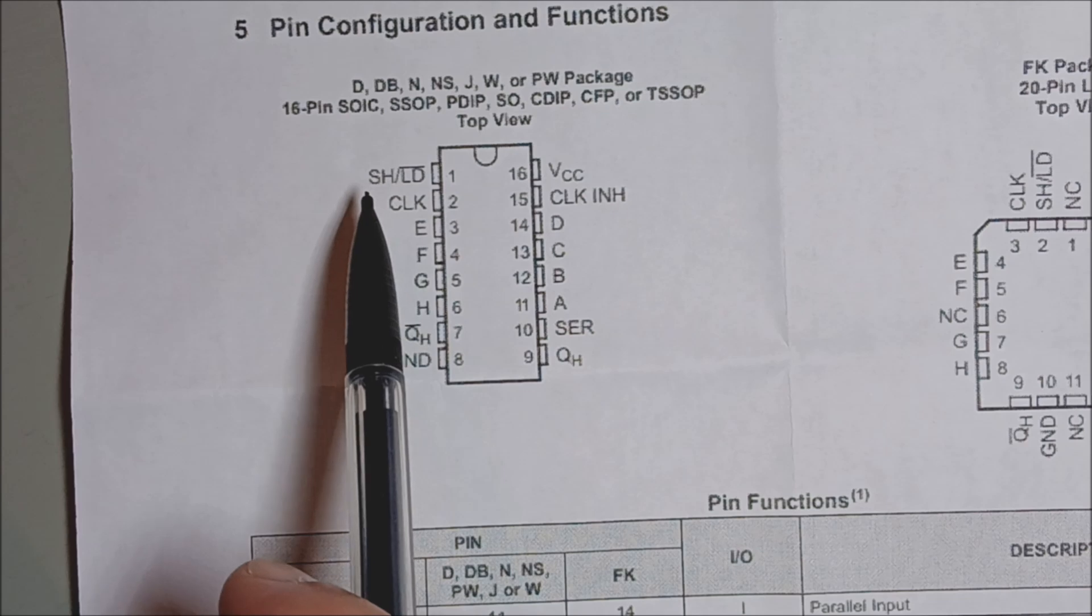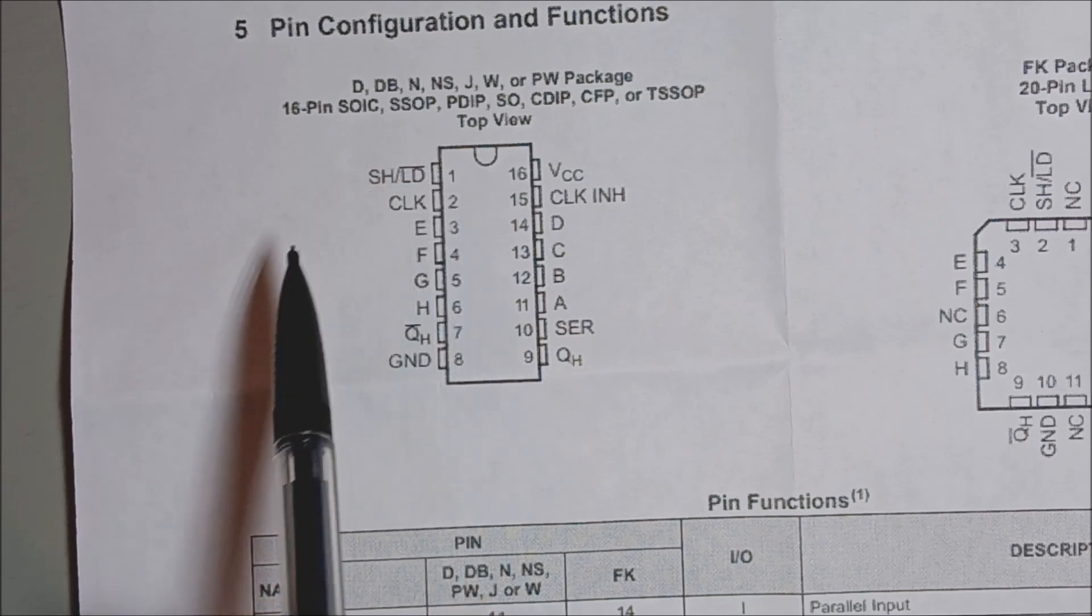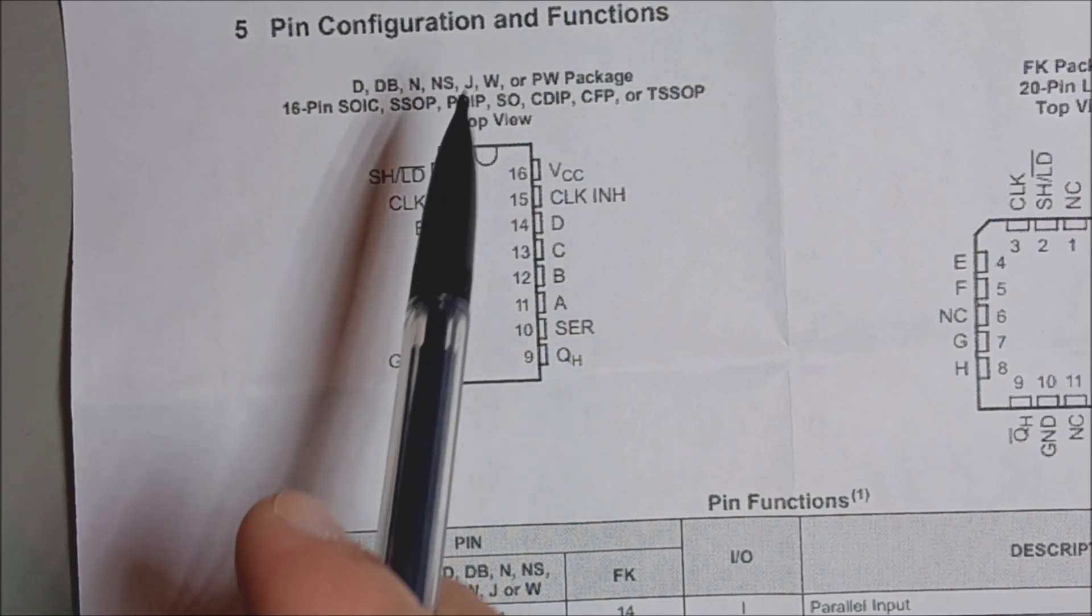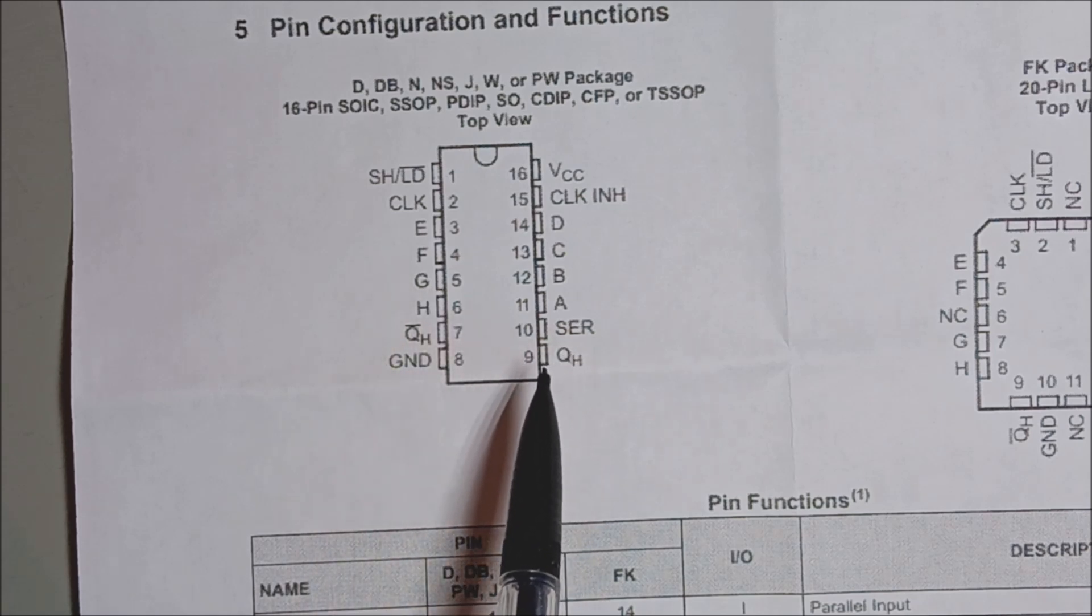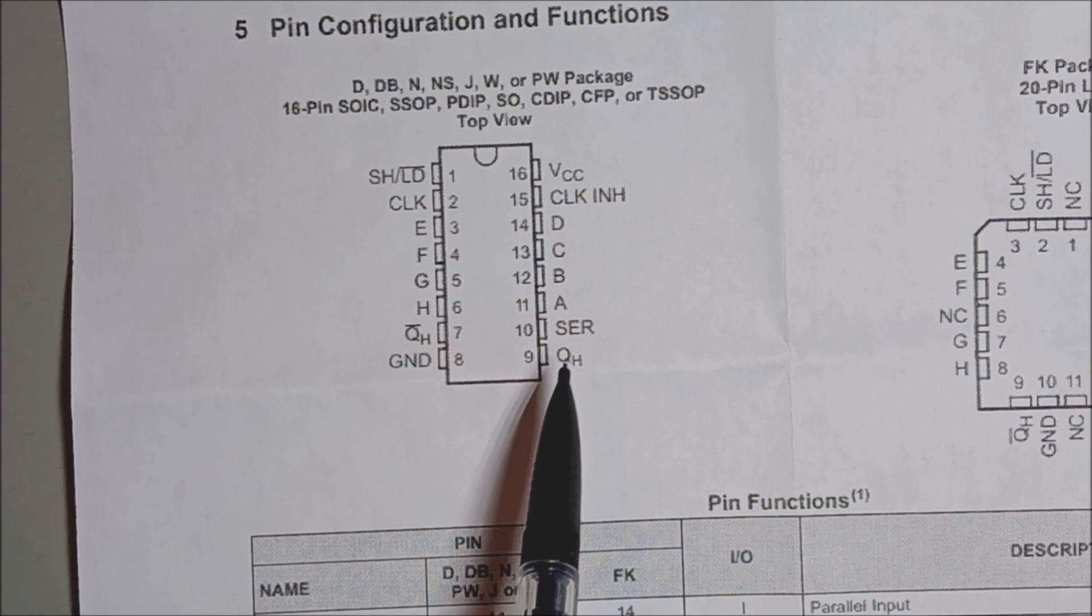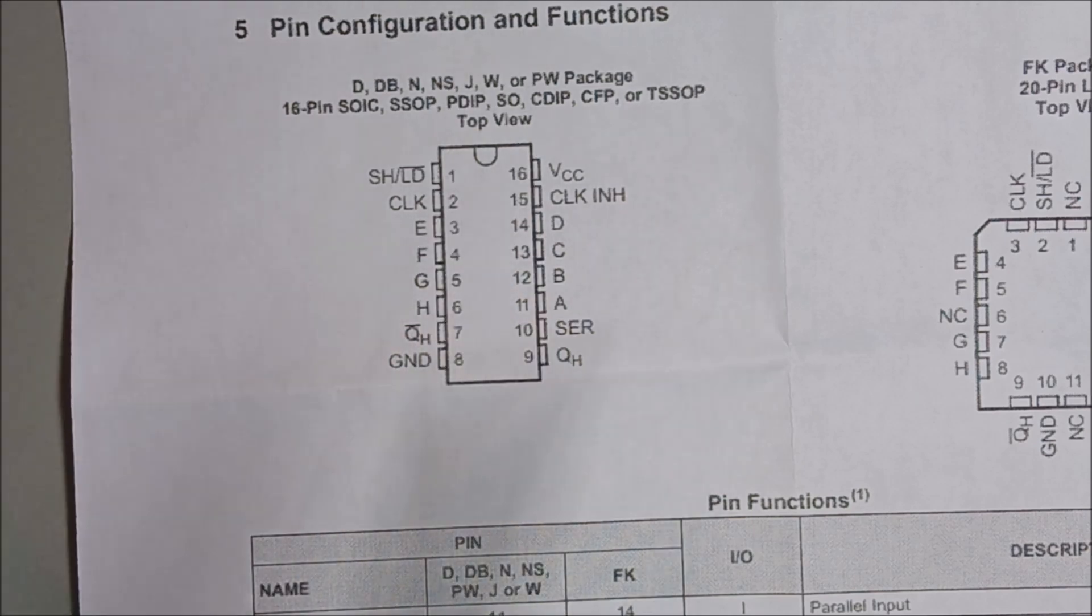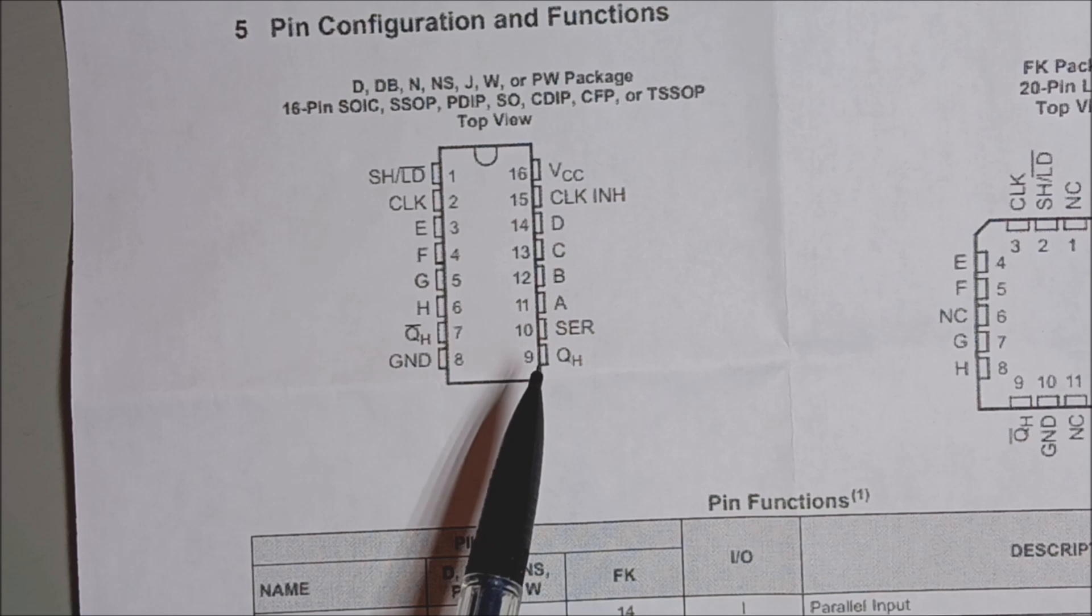Now when you hit the shift load and send that a low, it'll take the most significant bit and automatically send it out this serial out pin, which is called QH on this pinout diagram. I guess I've already explained the last pin that you really want to make use of, which is pin 9.